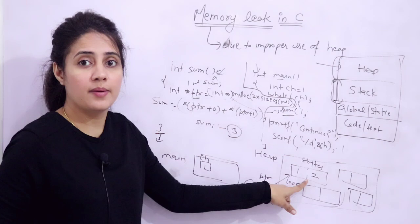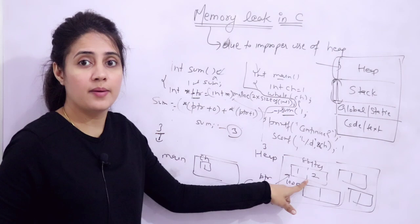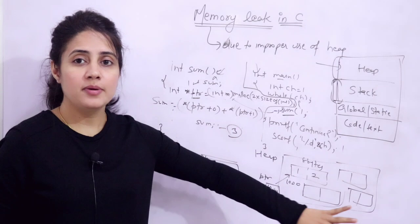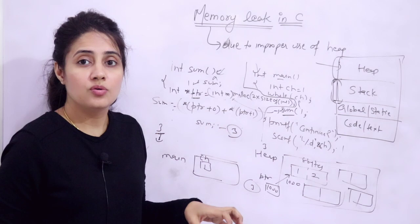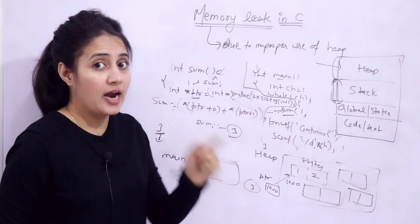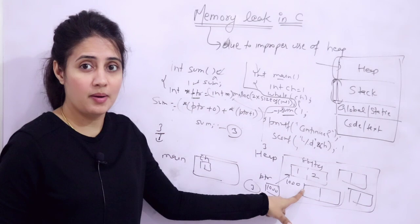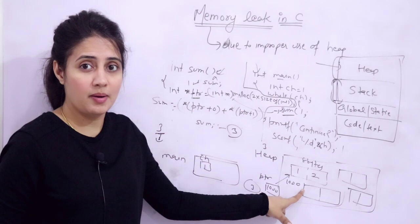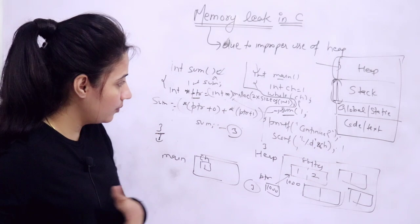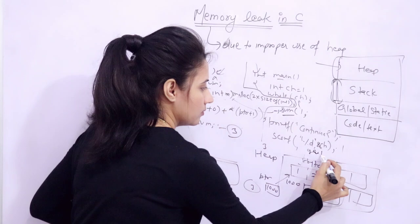This memory cannot be reused. If you're allocating for 1000 or even 1 lakh integers every loop iteration without freeing, you just keep consuming heap memory without releasing it. At some point the memory would be exhausted, your application may fail, or your system may shut down. Memory is a crucial resource and you are just wasting it. This situation - improper use of heap where you allocate memory dynamically but never release it - is called memory leak.